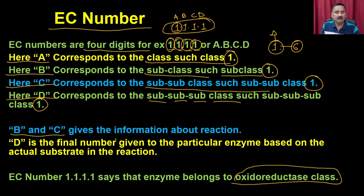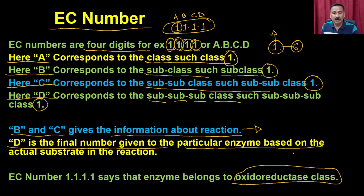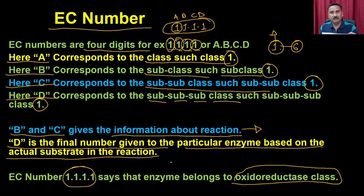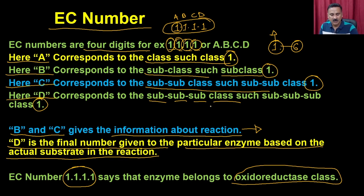The digits 'b' and 'c' give information about the type of reaction this enzyme catalyzes. The digit 'd' is the final number assigned specifically based on the actual substrate involved in the reaction. From the EC number, you get full information: which class the enzyme belongs to, what kind of reaction it catalyzes, and what substrate is involved. That is why the EC number is a very powerful tool for scientists to obtain complete information about a particular enzyme.